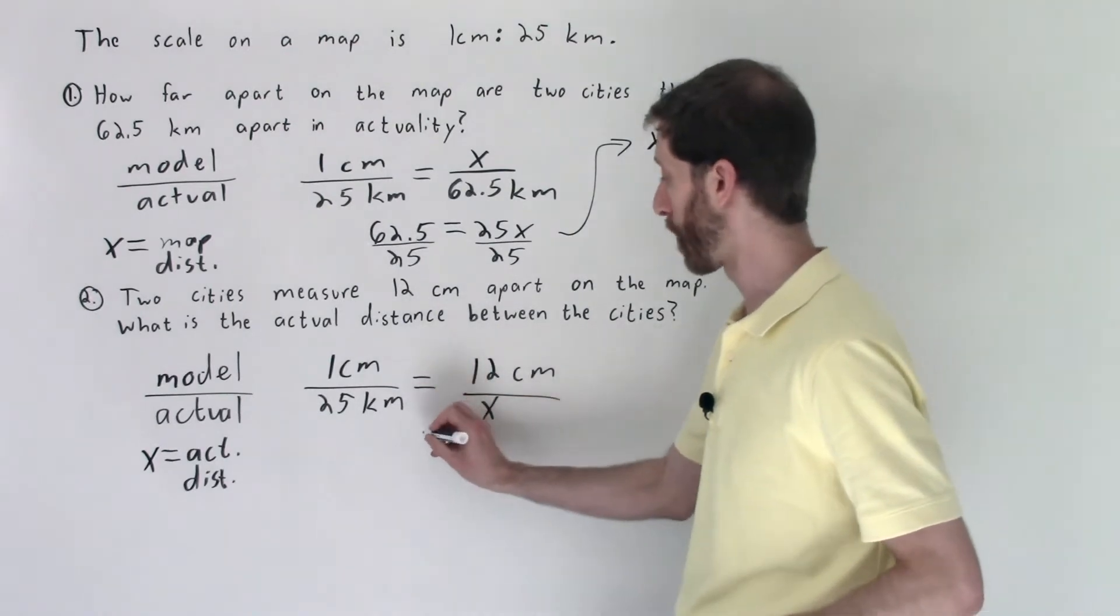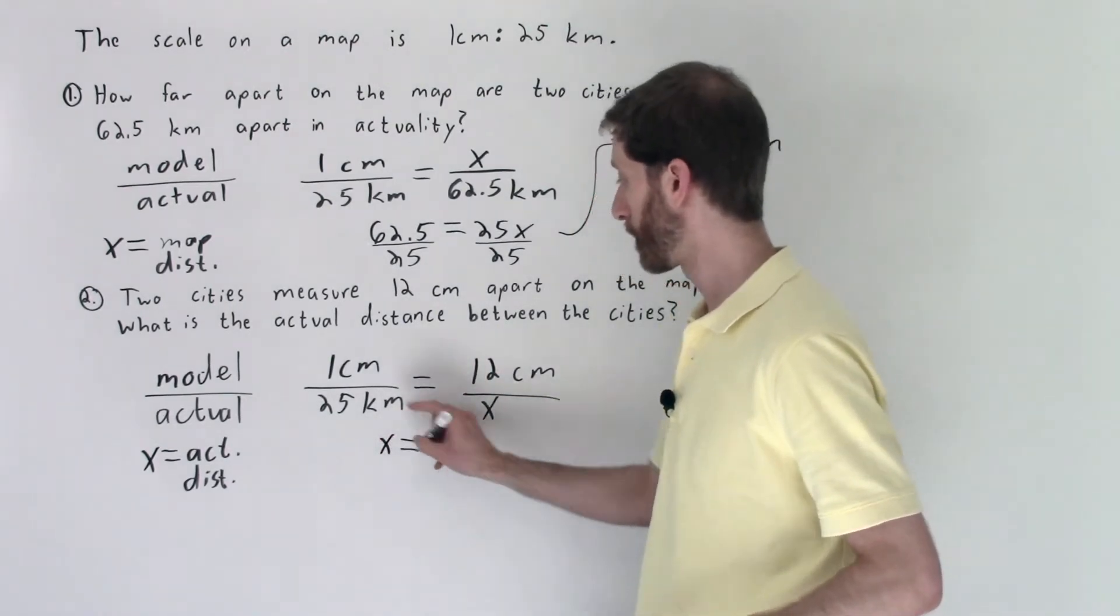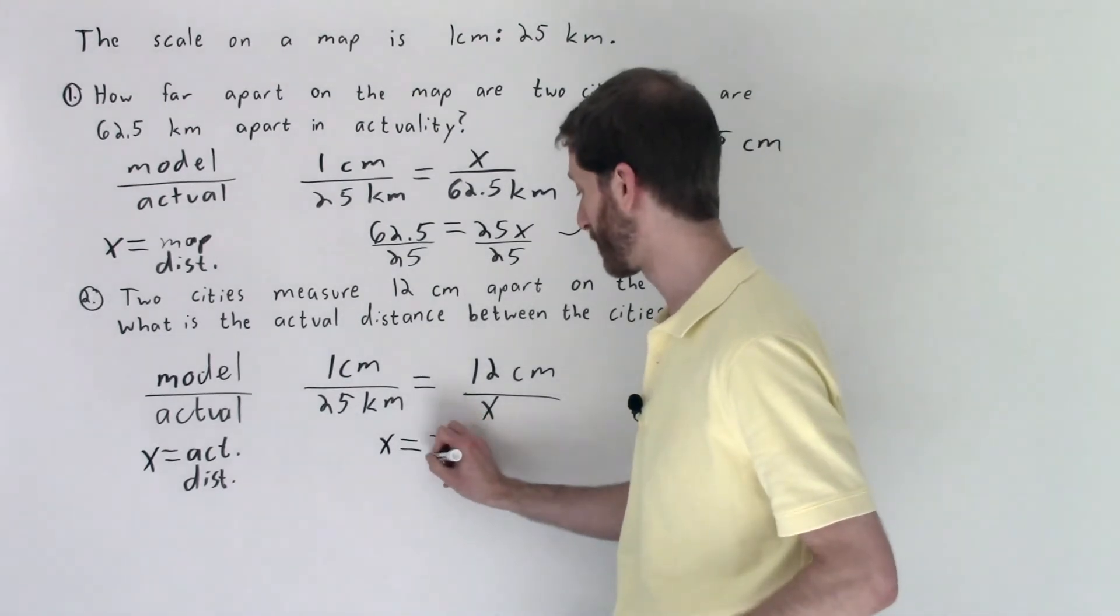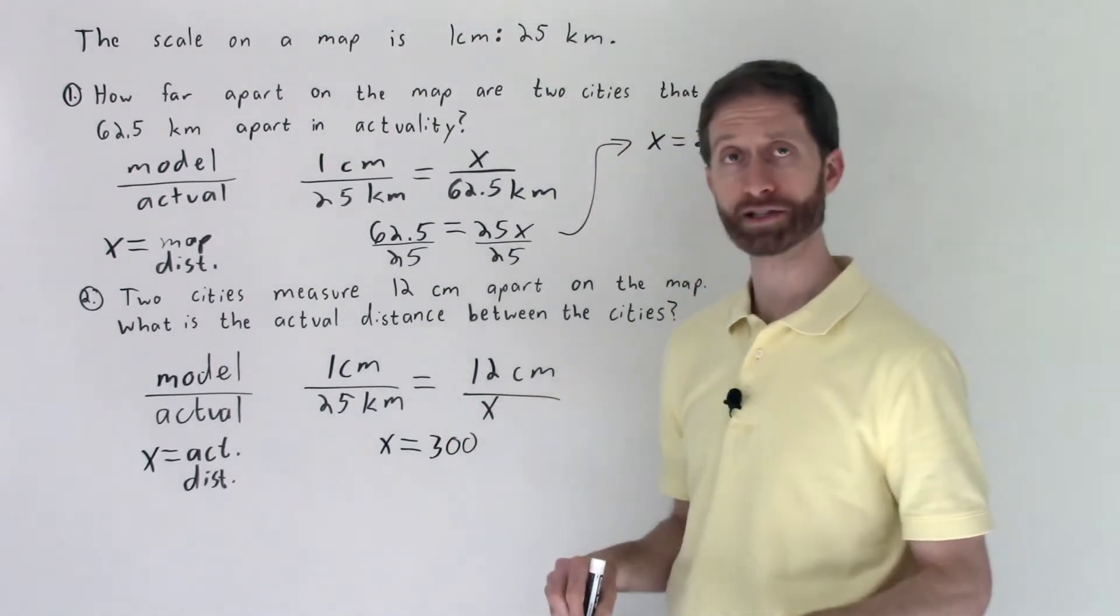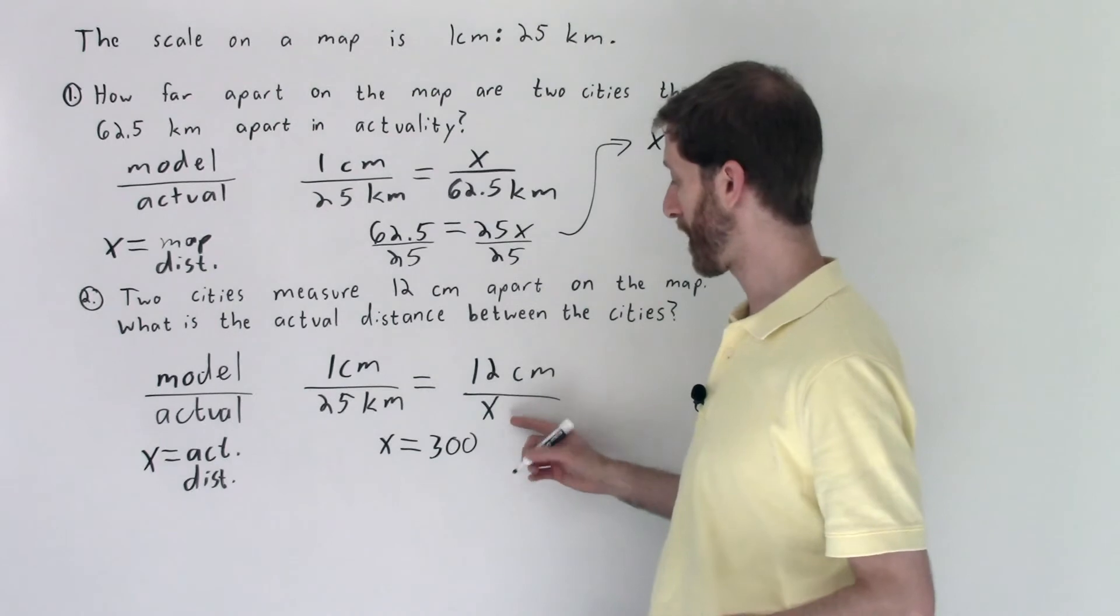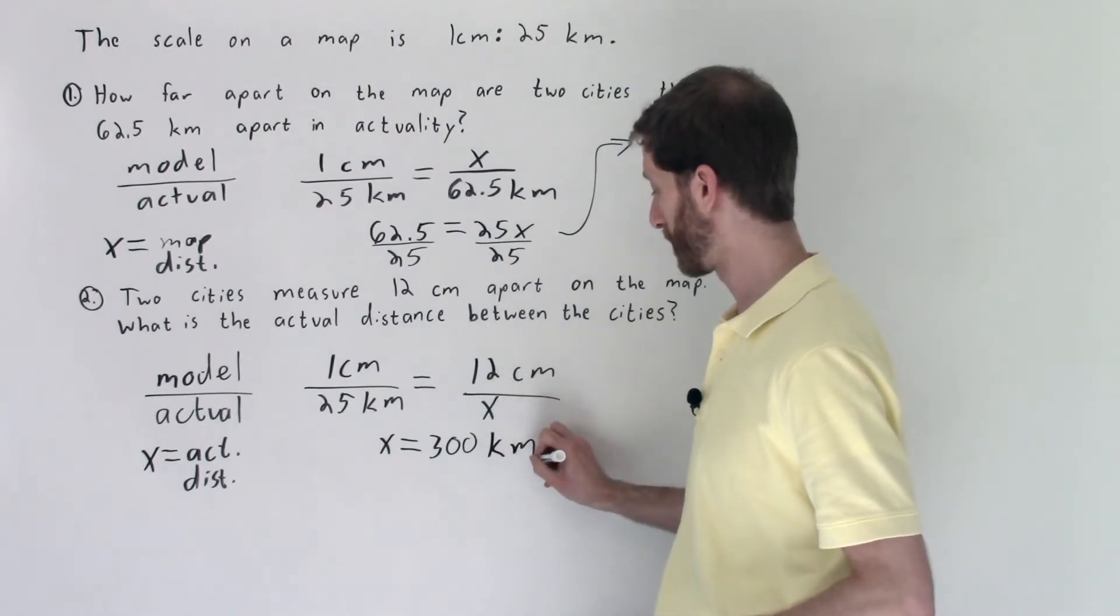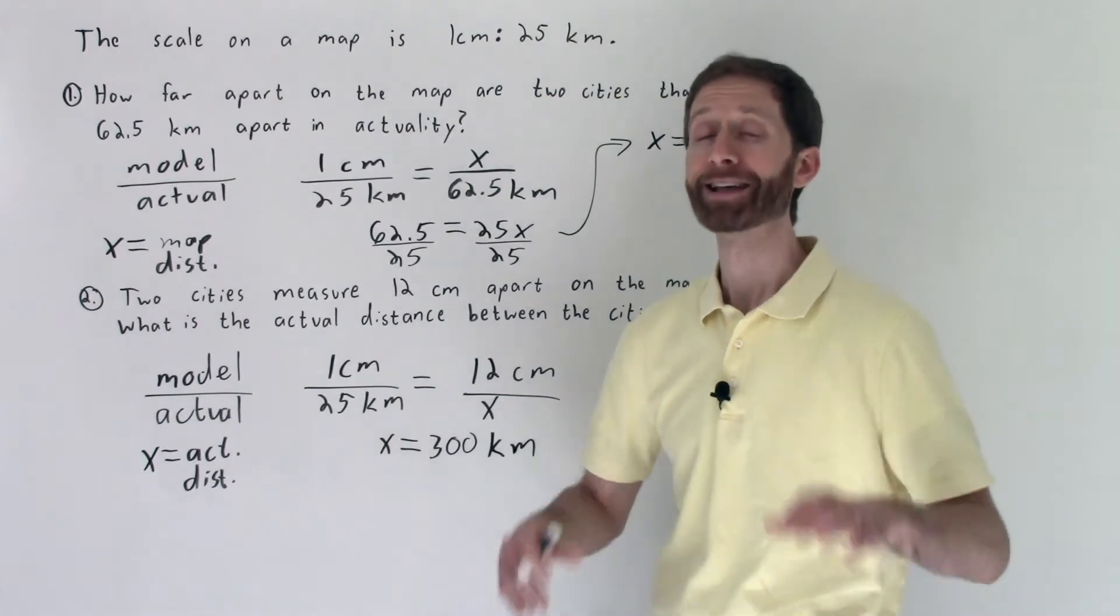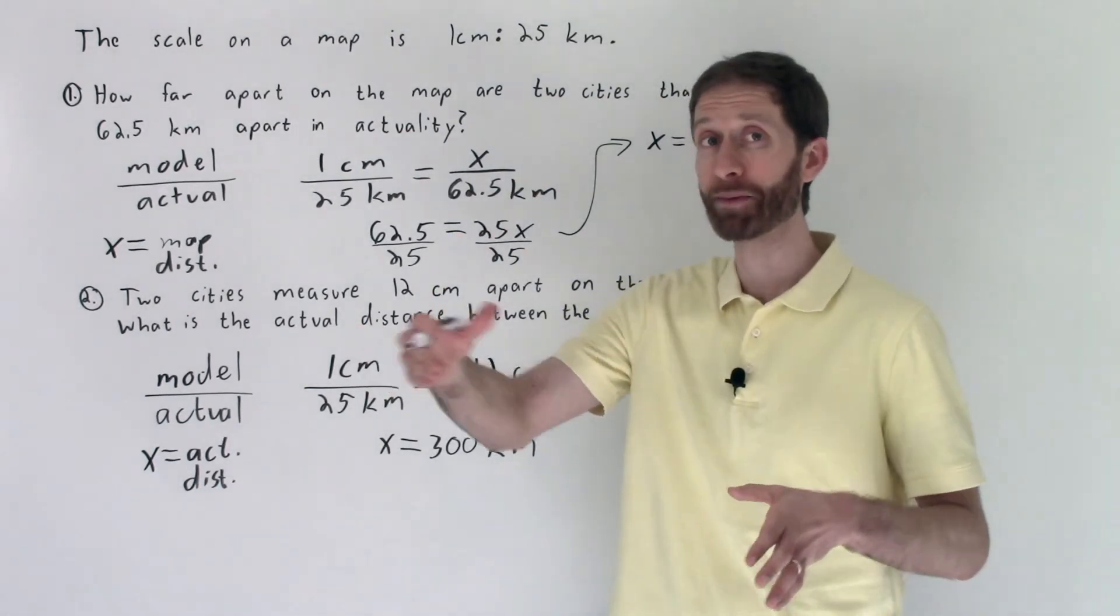Now all we need to do is cross multiply. X times 1 is x, 25 times 12 is 300, and we know that our units need to be in kilometers because that's the comparison point that we were trying to find. So the actual distance between the cities is 300 kilometers.